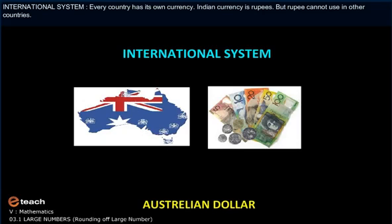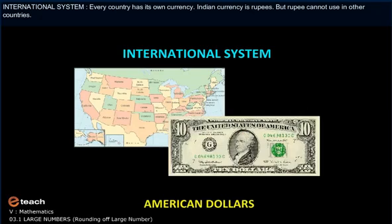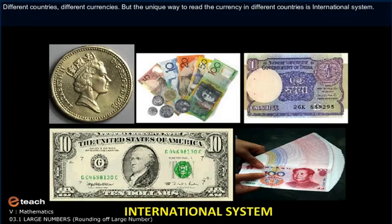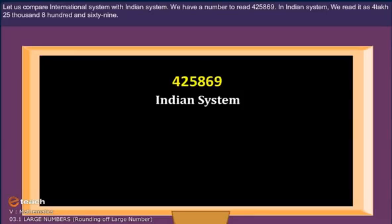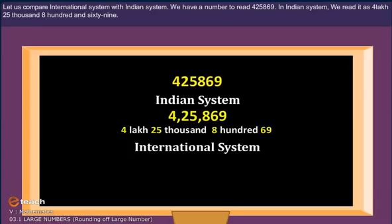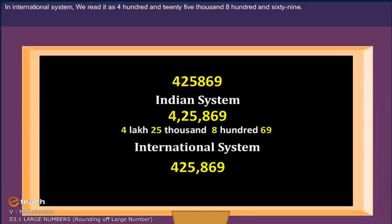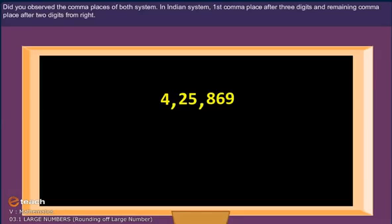International system. Every country has its own currency. Indian currency is rupees, but rupees cannot be used in other countries. Different countries use different currencies. The unique way to read currency across different countries is the international number system. Let us compare the international system with the Indian system. We have the number 4,25,869. In the Indian system, we read it as four lakh twenty-five thousand eight hundred and sixty-nine. But in the international system, we read it as four hundred twenty-five thousand eight hundred and sixty-nine.